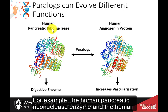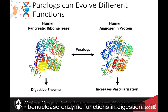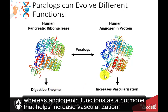For example, the human pancreatic ribonuclease enzyme and the human angiogenin protein are paralogs and share a similar protein structure. However, the ribonuclease enzyme functions in digestion, whereas angiogenin functions as a hormone that helps increase vascularization.